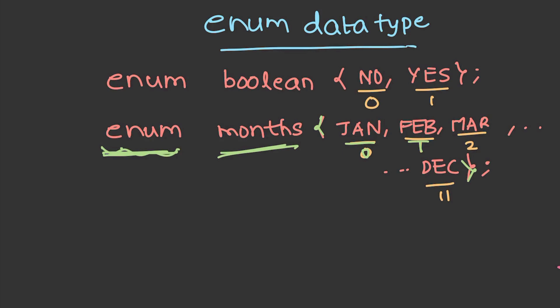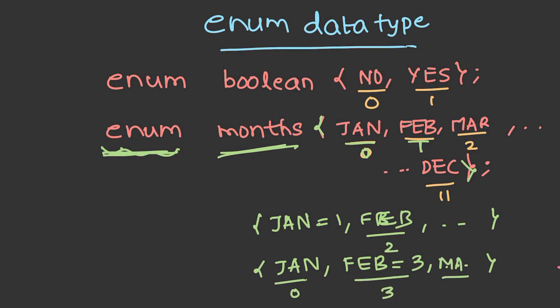Suppose there is a slight modification to this enum data type where you declare January to be 1, then February will be automatically assigned to 2 and so on. The other case can be, we can leave out the first and if for example for February if we declare it as 3, then January will be 0, February will be 3 and then if March is following it, it will be 4 and so on.